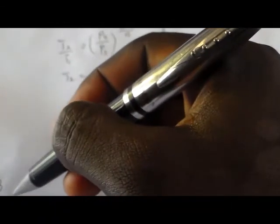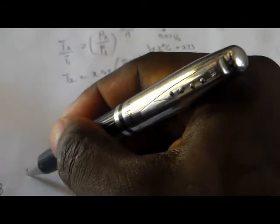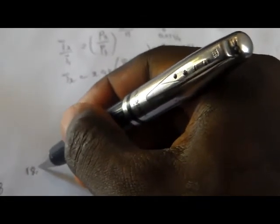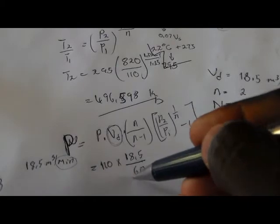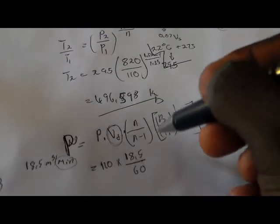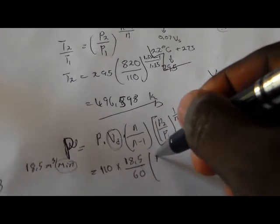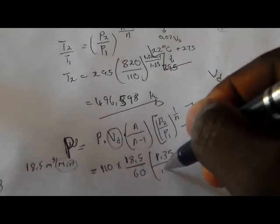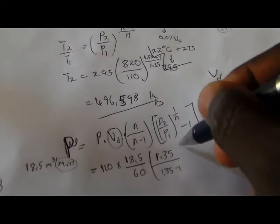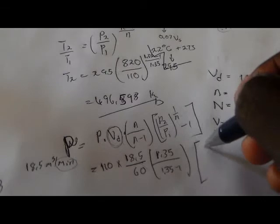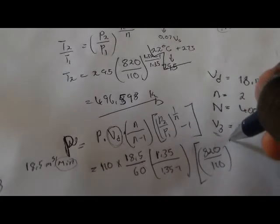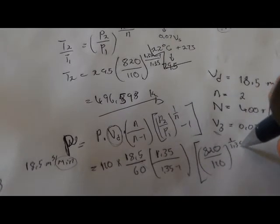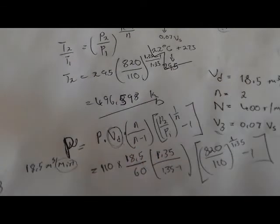The volume delivered is 18.5 cubic meters per second. When we're calculating the power, we want it per second. Then our index, which is 1.35 divided by 1.35 minus one, to the power — multiplied by pressure number two, 820, divided by 1110, to the power 1 divided by 1.35 minus one. So then you find your power.